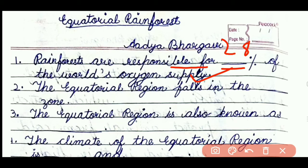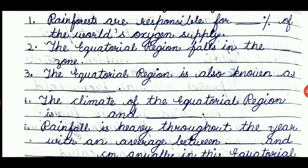In the second question, the equatorial region falls in the dash zone. The answer is torrid zone. Question number three: the equatorial region is also known as dash. The answer will be rainforest.